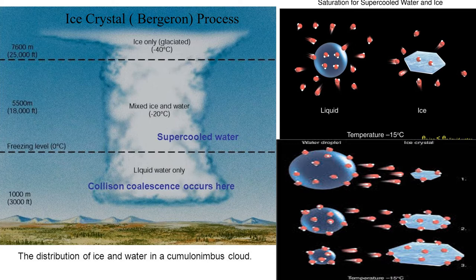Suppose that we take an imaginary balloon flight up through the cumulonimbus cloud. Entering the cloud, we observe cloud droplets growing larger by the process described in the previous lecture. As expected, only water droplets exist there, but the base of the cloud is warmer than zero degrees centigrade.